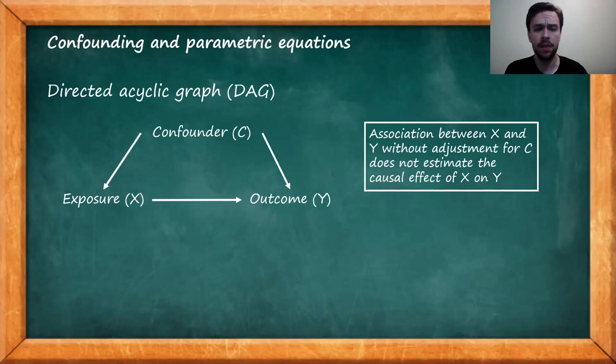To start off our discussion, let's first consider this directed acyclic graph, or DAG for short, shown here on the screen. Here we have our exposure or treatment variable that we're going to call X, our outcome or response variable Y, and our confounder variable which is just a common cause of X and Y. We are going to call this variable C. For those of you who know DAGs, we can clearly see that the association between X and Y without adjustment for C is confounded, and therefore this simple association does not estimate the causal effect of X on Y.